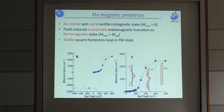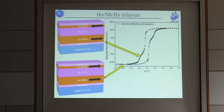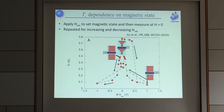We turned these sorts of devices into spin valves, so you've got two holmium layers with different thicknesses and therefore different coercivities. There's then a region where there is some degree of anti-parallel alignment of the two magnetic layers, and we're switching between those two states and looking for a significant change in the critical temperature.